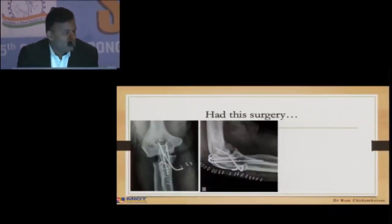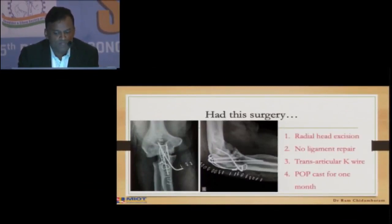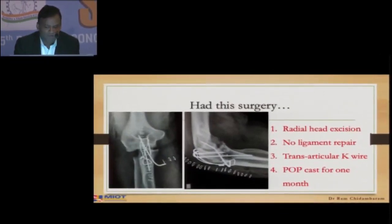Let us see some case scenarios. This is not completely theory. It's a 40-year-old man. The index X-ray is this. A 3D CT was done at the time by the surgeon and he had this surgery. So what went wrong? The radial head was excised, there was no ligament repair, and a transarticular K-wire was placed.